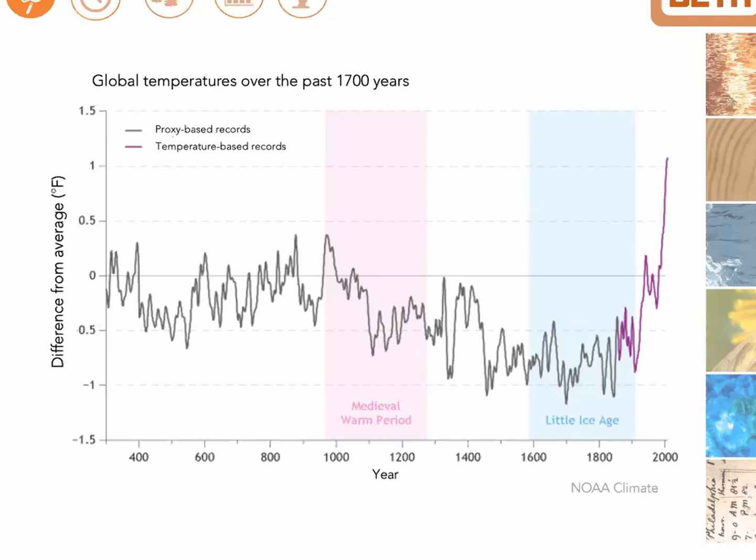And during this Little Ice Age, many areas in the Northern Hemisphere, particularly in Europe, experienced unseasonably cold winters and some increased storms and precipitation.